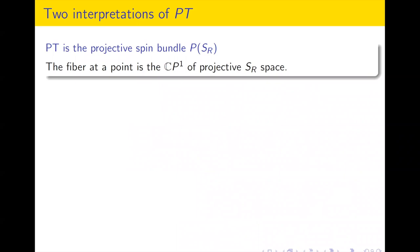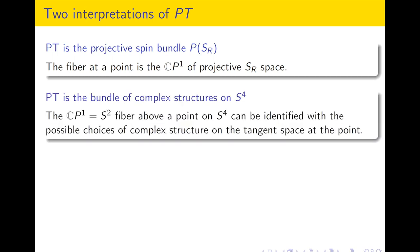The overall picture is: you have your CP3, and your four-dimensional Euclidean spacetime has been compactified as S4. Each point in S4 corresponds to a sphere, a CP1, lying in CP3 — the CP3 is fibered by these CP1s. There are two ways of thinking about PT: one is as the projective spin bundle, where instead of looking at the C2 fibers you look at CP1 fibers. PT is just the projective spin bundle.